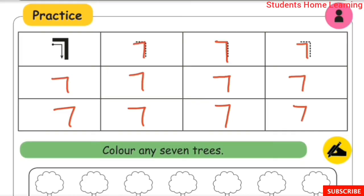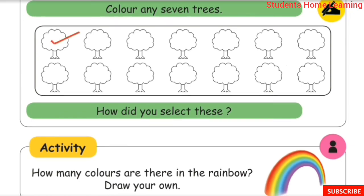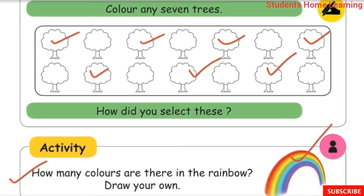This is seven. Color any seven trees: one, two, three, four, five, six, seven. How did you select them? This is how many colors are there in the rainbow — seven colors. Draw your own rainbow. Rainbow has seven colors.